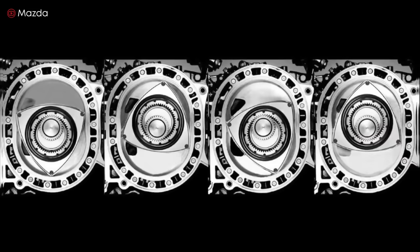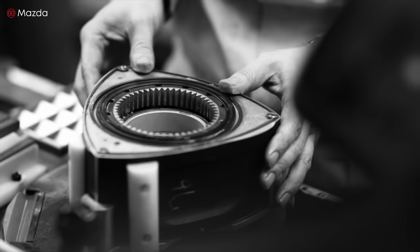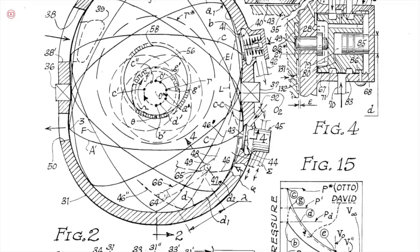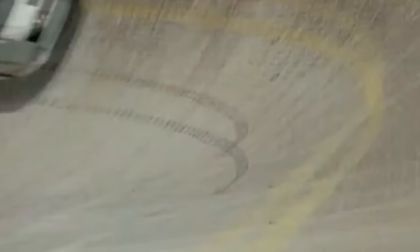The first rotor engine began operating in 1958. After NSU Motorwerken announced it had created a new and promising engine, many big-name car companies started licensing designs to produce rotary engines. We saw results with the Chevrolet AeroVet XP895, Chevrolet Vega.